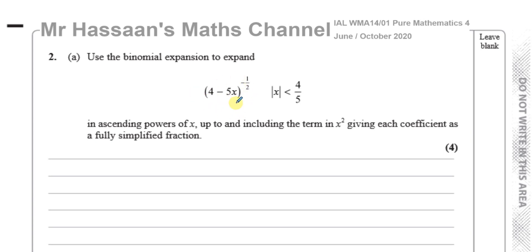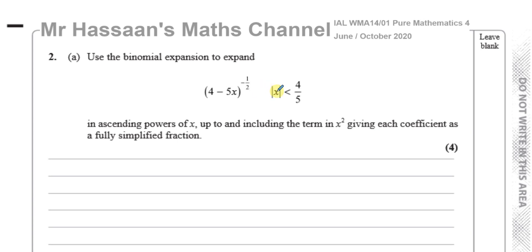We are asked to expand this bracket in ascending powers of x — starting from the constant up to x squared — giving each coefficient as a fully simplified fraction. The condition that the modulus of x is less than 4 over 5 isn't needed right now, but it is important in our syllabus. Sometimes they ask you to give the condition for the expansion to be valid, which is what this represents. I'll explain how it's derived after expanding.